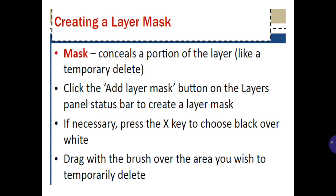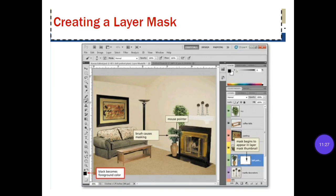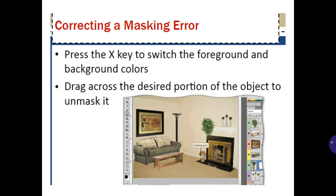Creating a layer mask: a mask conceals a portion of the layer, like a temporary delete. Click the Add Layer Mask button on the layers panel status bar to create a layer mask. If necessary, press the X key to choose black over white. Drag with the brush over the area you wish to temporarily delete. Correcting a masking error: press the X key to switch the foreground and background colors. Drag across the desired portion of the object to unmask it.